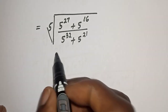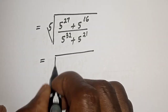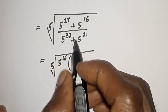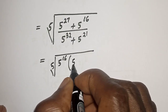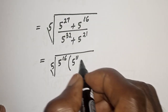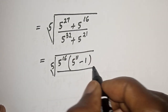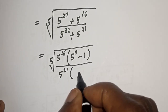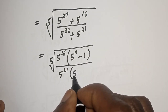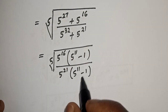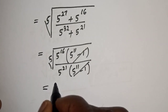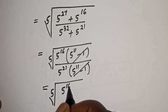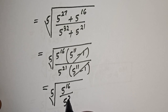From here we have 5 raised to power 16 — let's bring it out. We have 5th root of 5 raised to power 16, bracket 5 raised to power 11 minus 1. For the denominator, 5 raised to power 21 — let's bring it out — 5 raised to power 21, bracket 5 raised to power 11 minus 1. We cancel the bracket terms, giving us 5th root of 5 raised to power 16 over 5 raised to power 21.